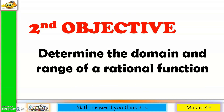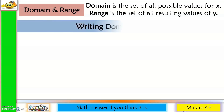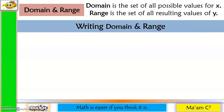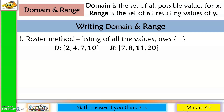Let us proceed to our second objective: determine the domain and range of a rational function. Domain is the set of all possible values for x, while range is the set of all resulting values of y. There are several ways to write domain and range. First is the roster method — listing or enumerating all values using braces.